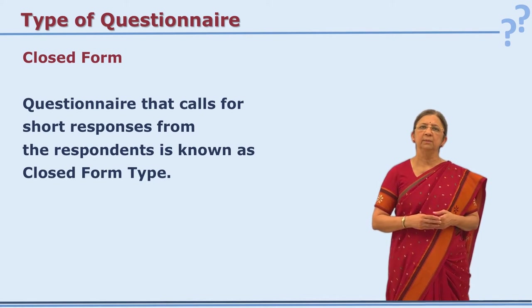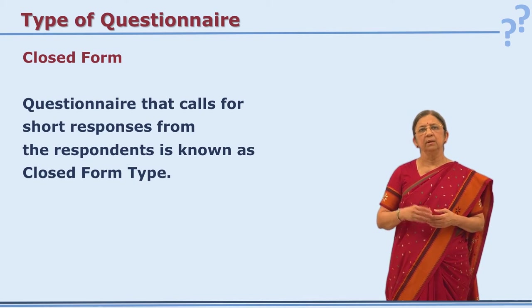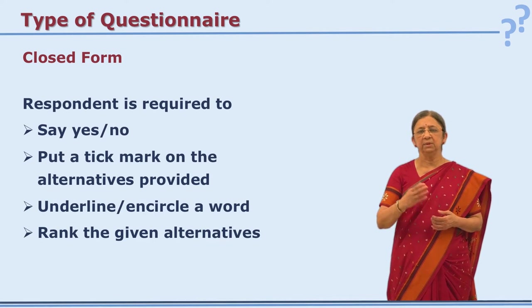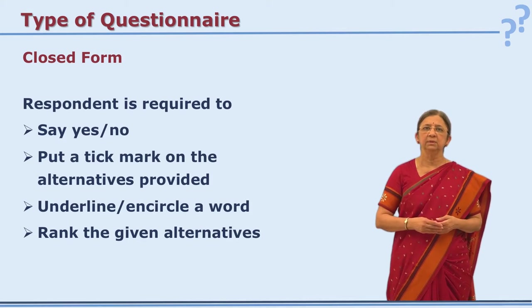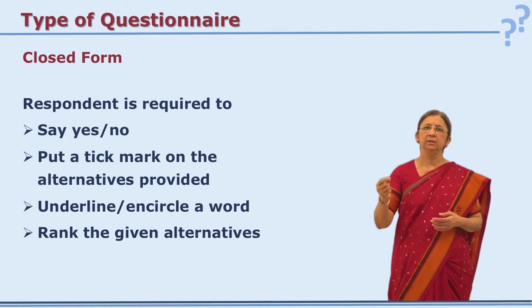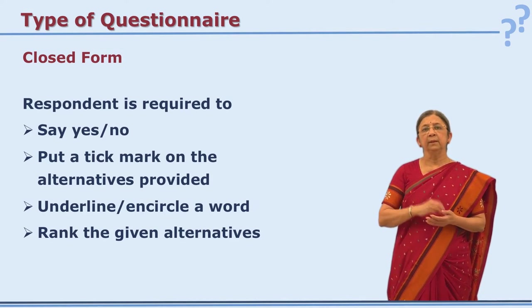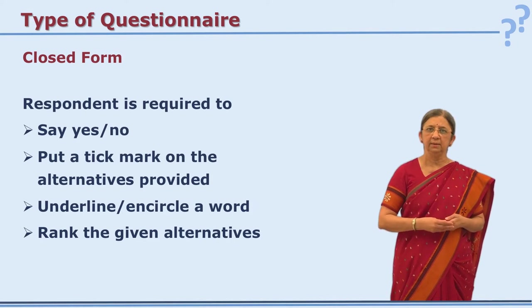In closed form, alternatives are provided and the respondent selects the most appropriate one — saying yes or no, ticking one of four options, ranking given statements, encircling or underlining the choice. There can be only one correct alternative or multiple alternatives depending on the question. For example, age group may allow only one answer, while a question about newspapers may allow multiple answers.